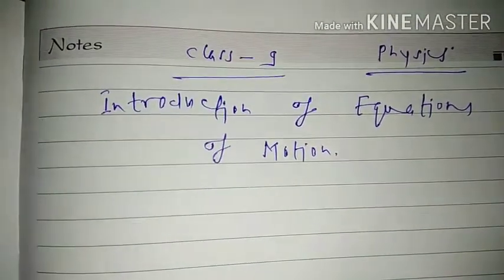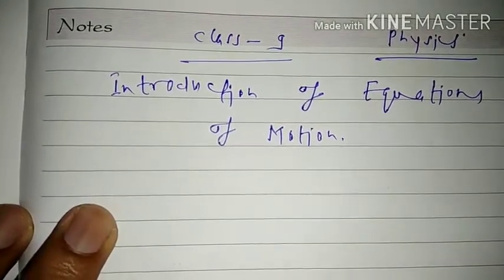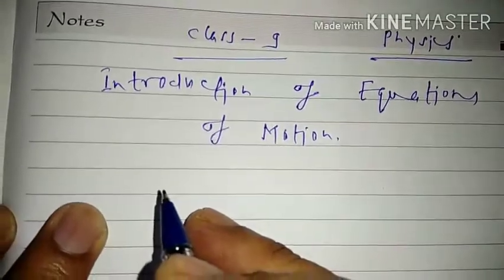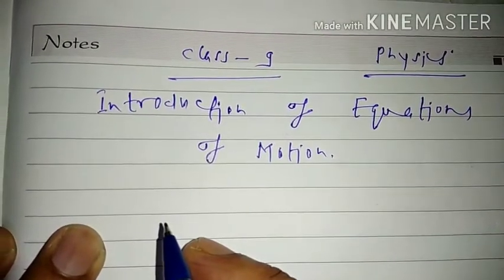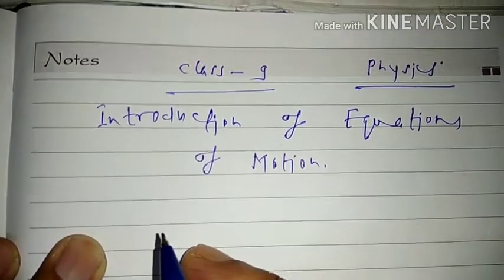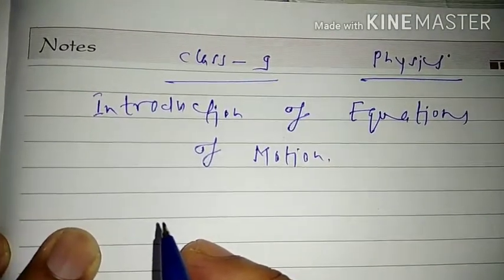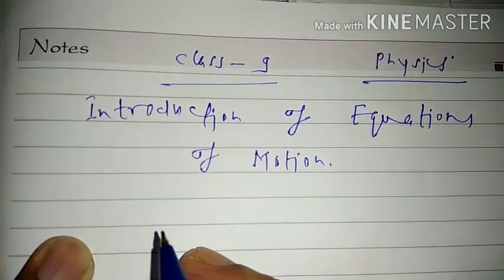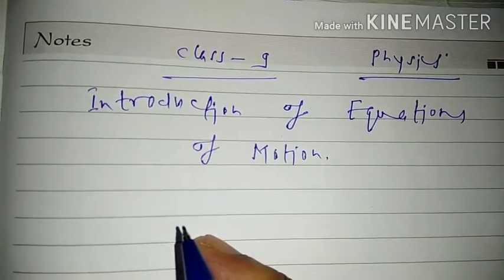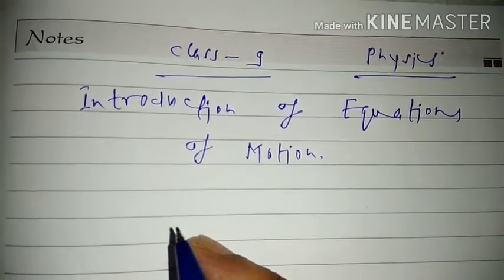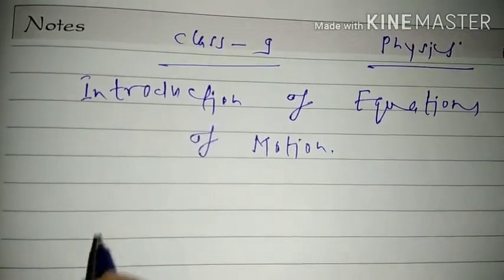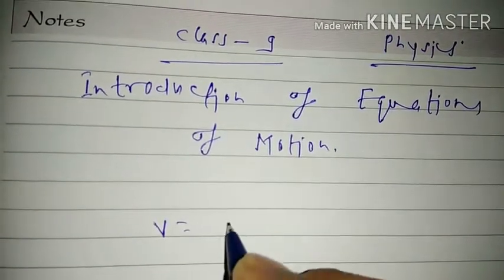What is the meaning of equations of motion? When an object moves along a straight line with uniform acceleration, then it is possible to relate its velocity, acceleration during motion, and the distance covered by it. This relation is called the equation of motion. We have three sets of equations — let us see them one by one.